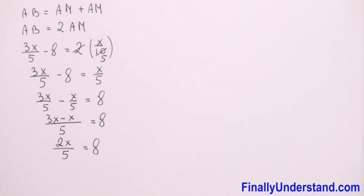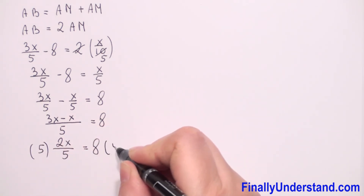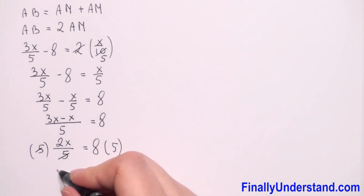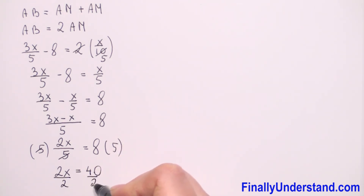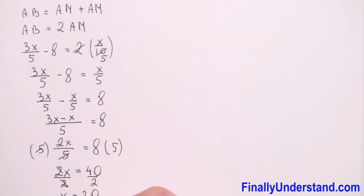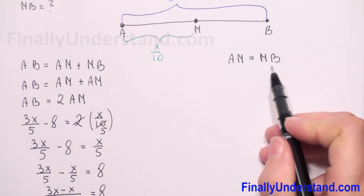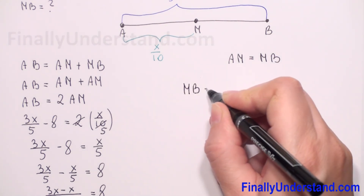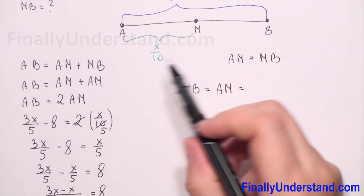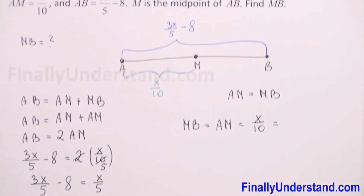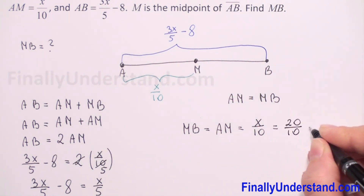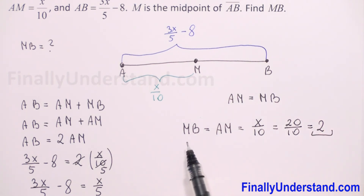Now we multiply both sides by 5 to clear the denominator, so 2x equals 40. Dividing both sides by 2, we get x equals 20. Now we can find MB: since MB equals AM and AM equals x over 10, substituting x equals 20 gives us 20 over 10, which equals 2. So the length of MB is 2.